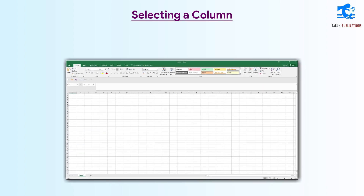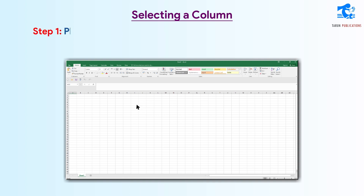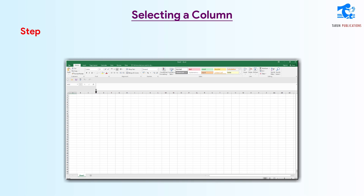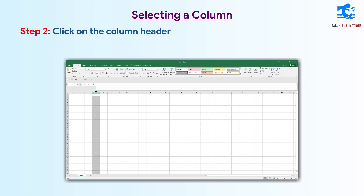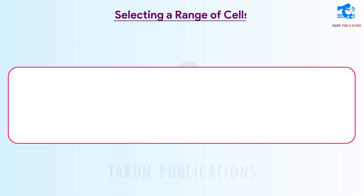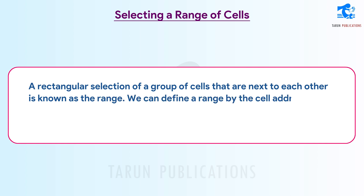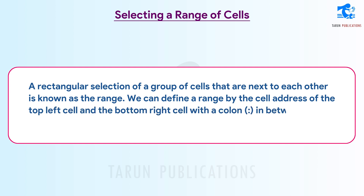Selecting a Column. A rectangular selection of a group of cells that are next to each other is known as the range. We can define a range by the cell address of the top left cell and the bottom right cell with a colon in between them.